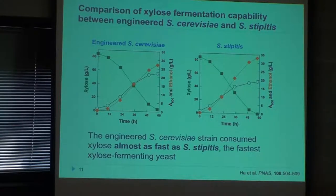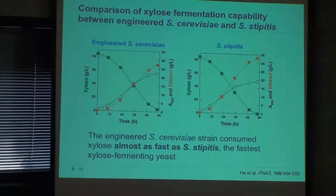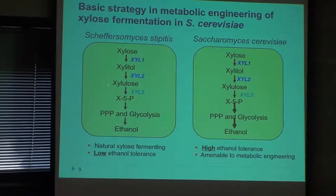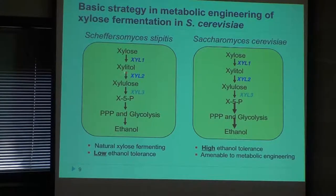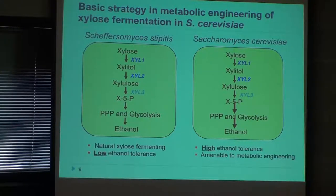We did genome sequencing to find what mutations caused rapid xylose fermentation. The paper was published about two weeks ago — we found a mutation in a transporter gene, and with that specific mutation in a sugar transporter, we amazingly had better xylose fermentation. This is the result: our engineered Saccharomyces cerevisiae consumes xylose very well and produces ethanol almost as fast as the naturally existing xylose-fermenting strain. Now we have an engineered strain that ferments xylose as well as the naturally existing system.